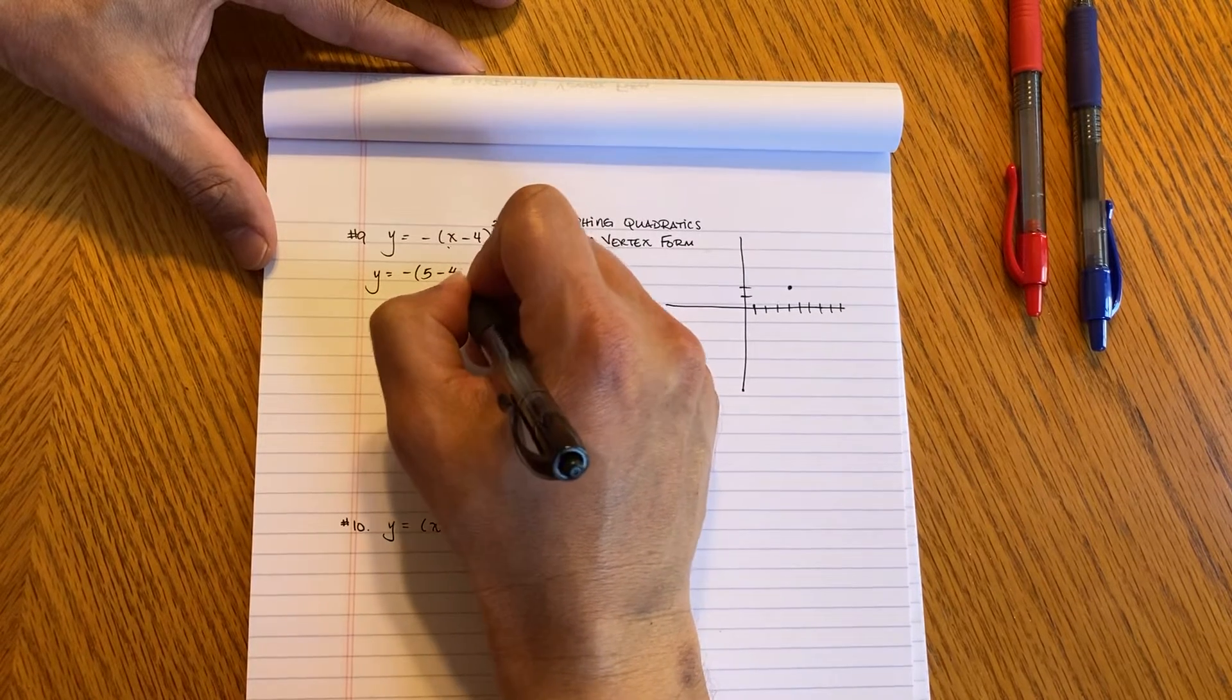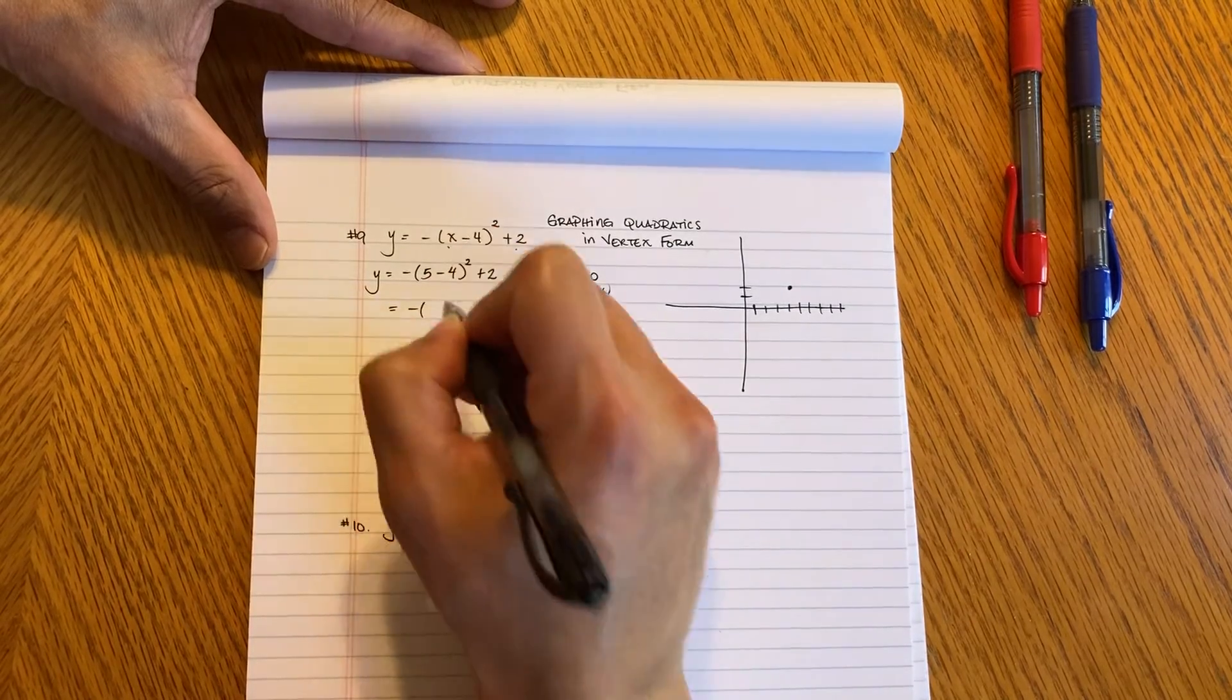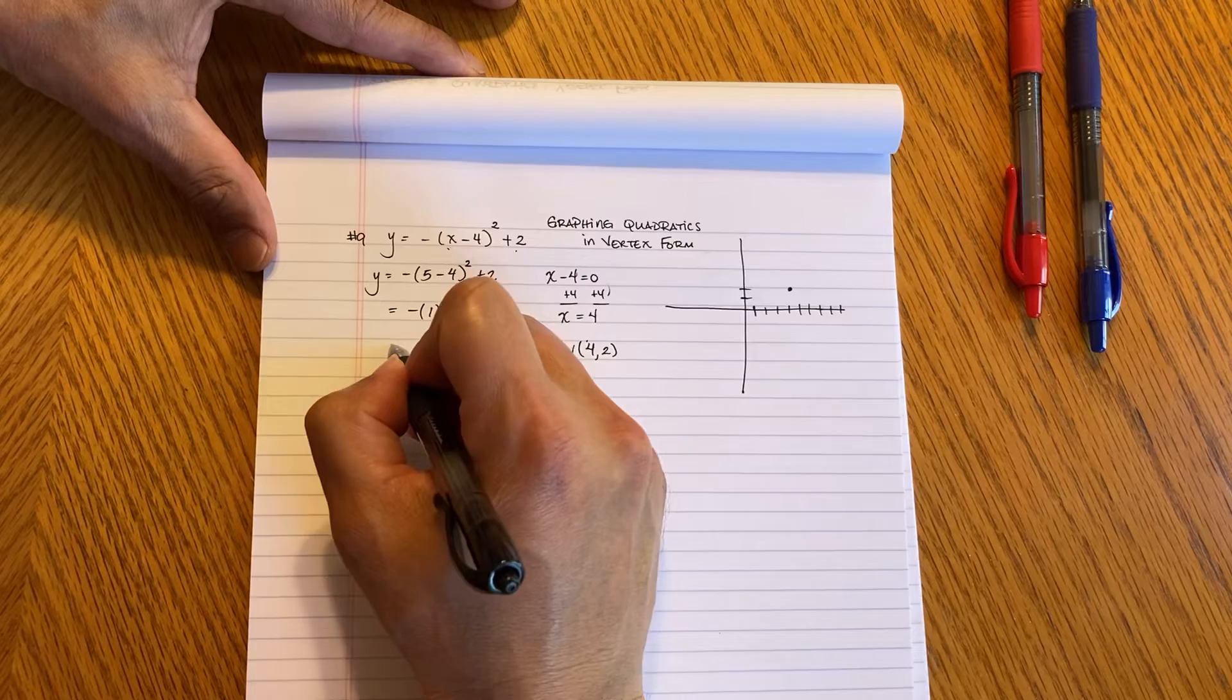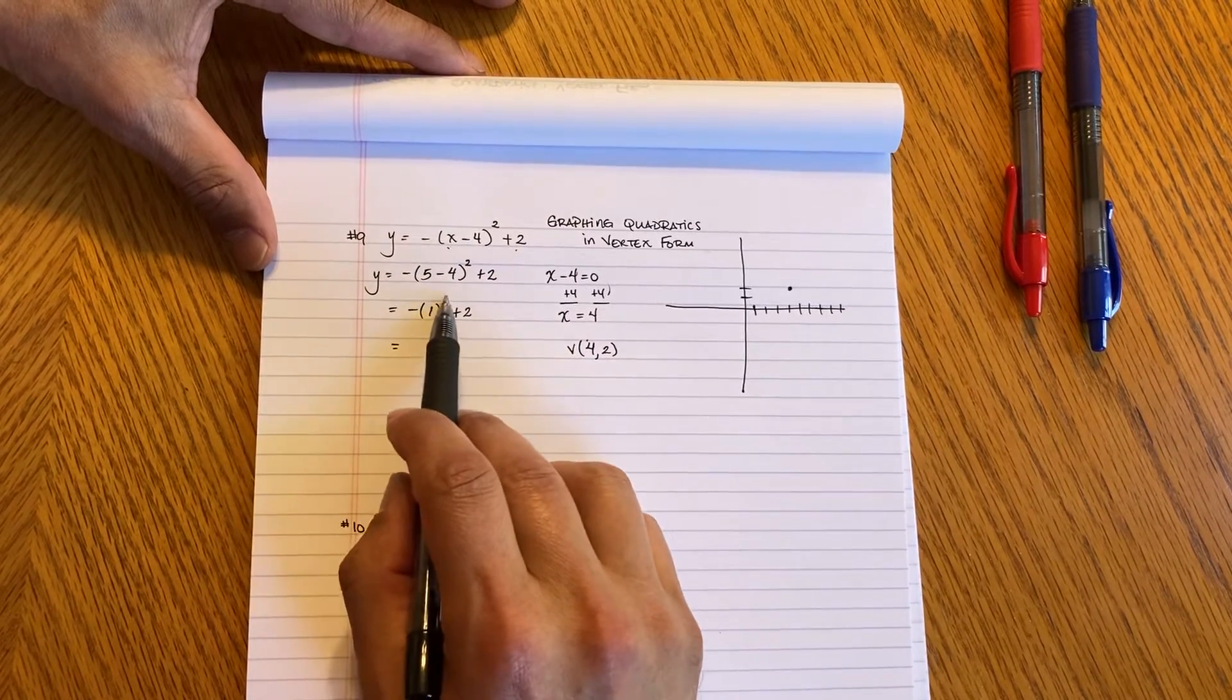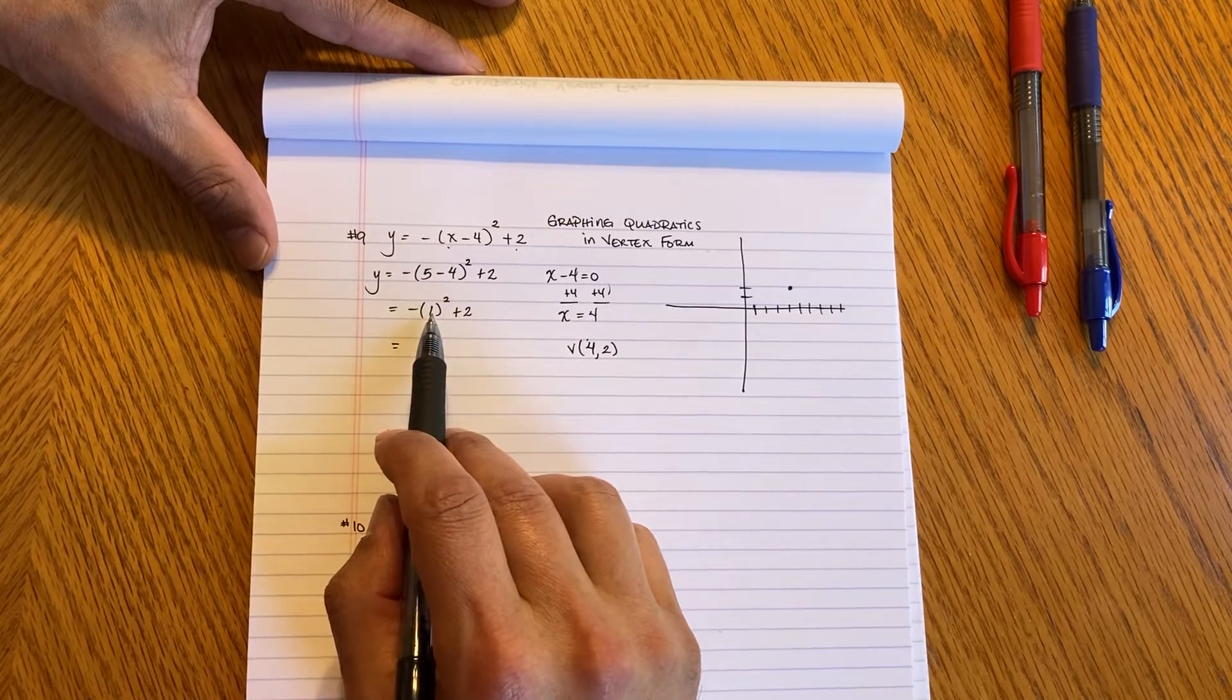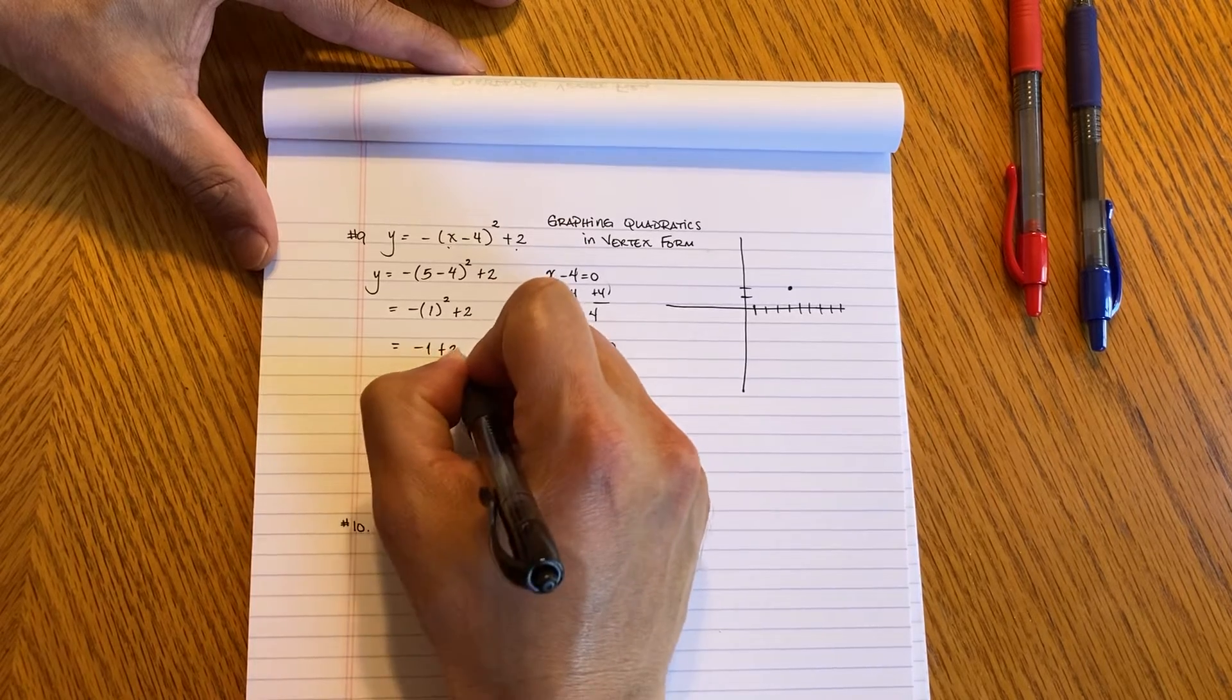So if X is equal to 5, I'm going to go ahead and plug it in and then I'm going to get negative (5 minus 4) is 1 to the second power. You have to do this first. Don't do this negative. Do 1 to the second power. That's 1 and then 1 times this negative that gives you negative 1 and then plus 2.